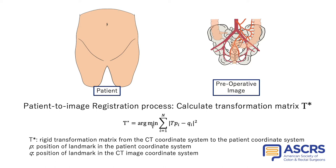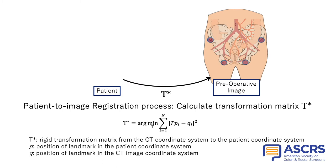Here we show the patient-to-image registration process. P is the position of the landmarks in the patient coordinate system, and Q is the position of the corresponding landmarks in the CT image coordinate system. T asterisk is the rigid coordinate transformation matrix used for transformations from the patient coordinate system to the CT image coordinate system. In the stereotactic navigation system, this transformation matrix enables us to determine the positions on images that correspond to each position on the patient.